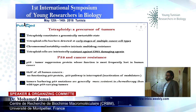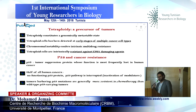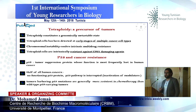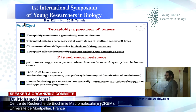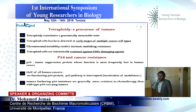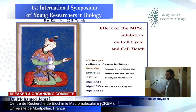Just two words about tetraploidy and P53. Tetraploidy is a genomically metastable state, and tetraploid cells have been detected in the early stage of multiple cancer types. This chromosomal instability confers resistance to cancer treatment. Tetraploid cells are intrinsically resistant against DNA damage and other drugs used in chemotherapy. And P53 — the tumor suppressor protein — whose function is most frequently lost in human cancer. Half of all human cancers have no functioning P53 protein or an interrupted P53 pathway, and P53 mutant tumors are generally more resistant to treatment than wild type.